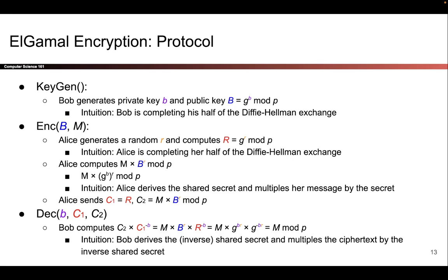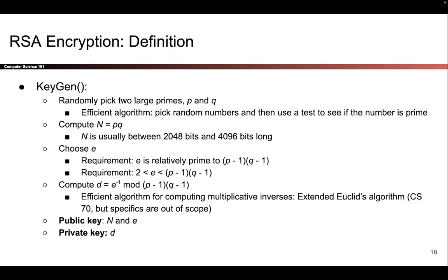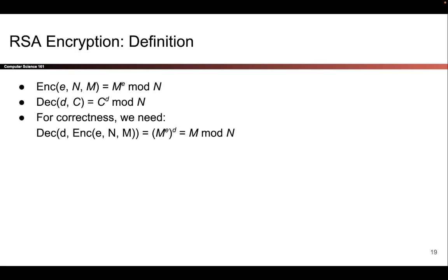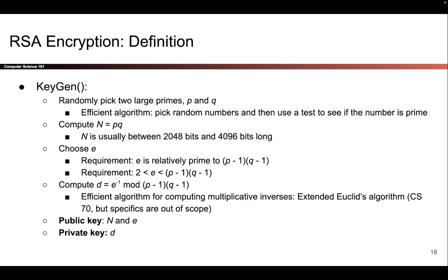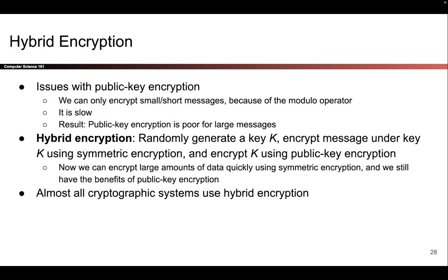So the messages that Alice wants to send are limited to numbers between zero and p minus one. Looking at RSA encryption, we have the same problem: messages are defined mod n, so all messages must be between zero and n minus one. Because n is some number that's 2,000 to 4,000 bits, the message Alice sends must be at most a few thousand bits — and likewise in El Gamal. That's a big issue with public key cryptography: you cannot encrypt a lot of data at once.